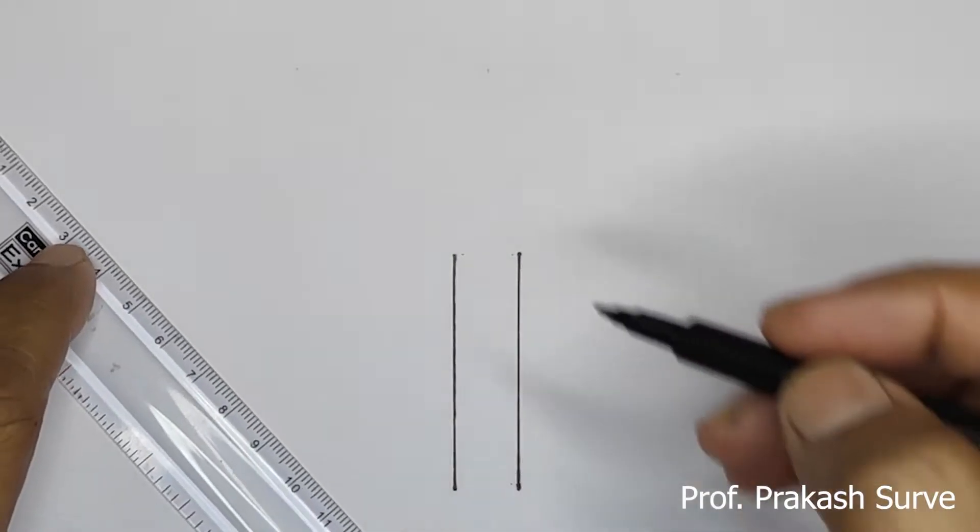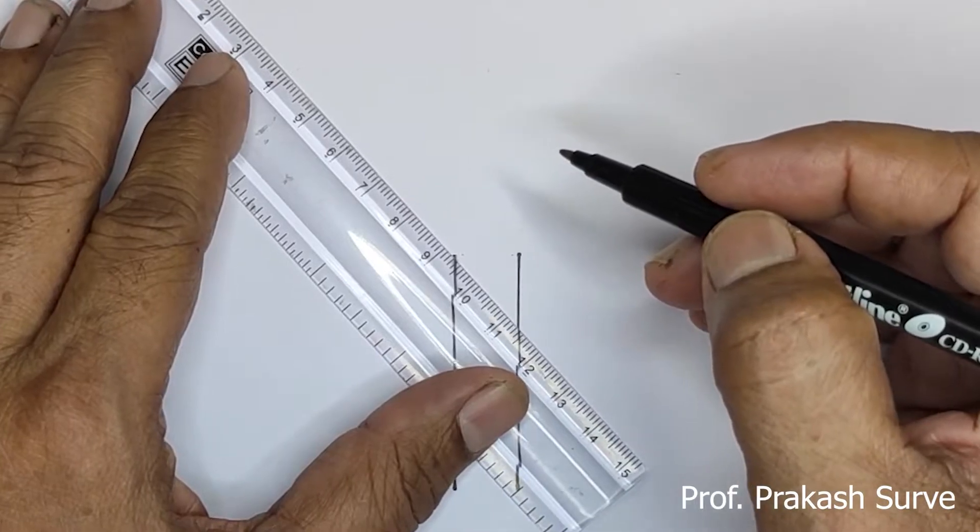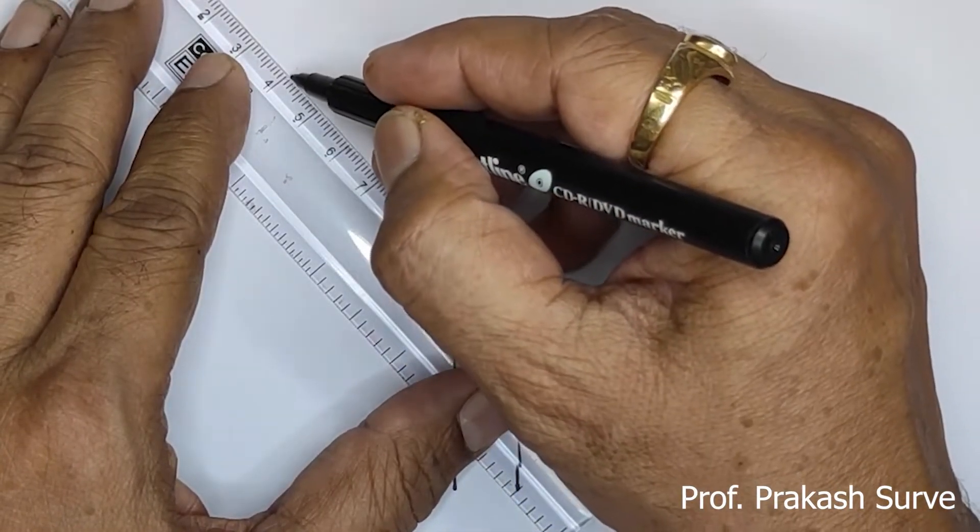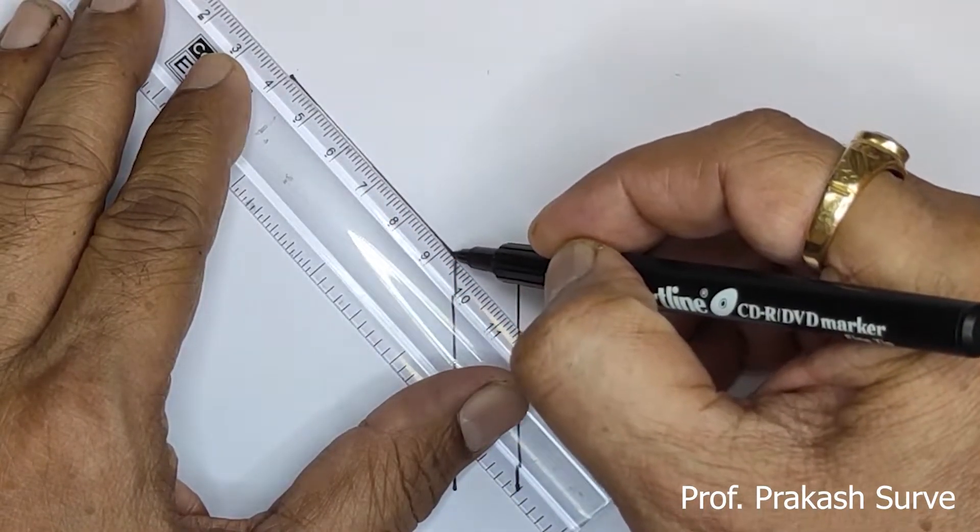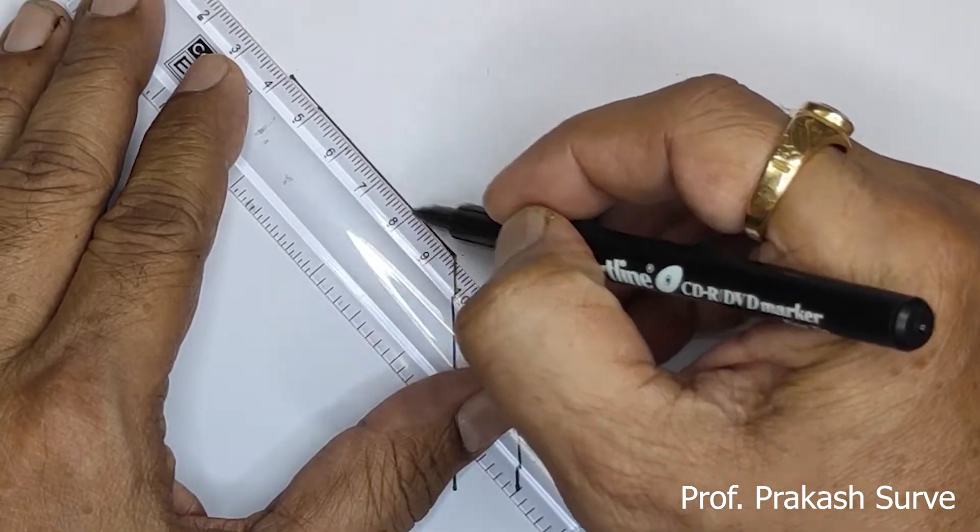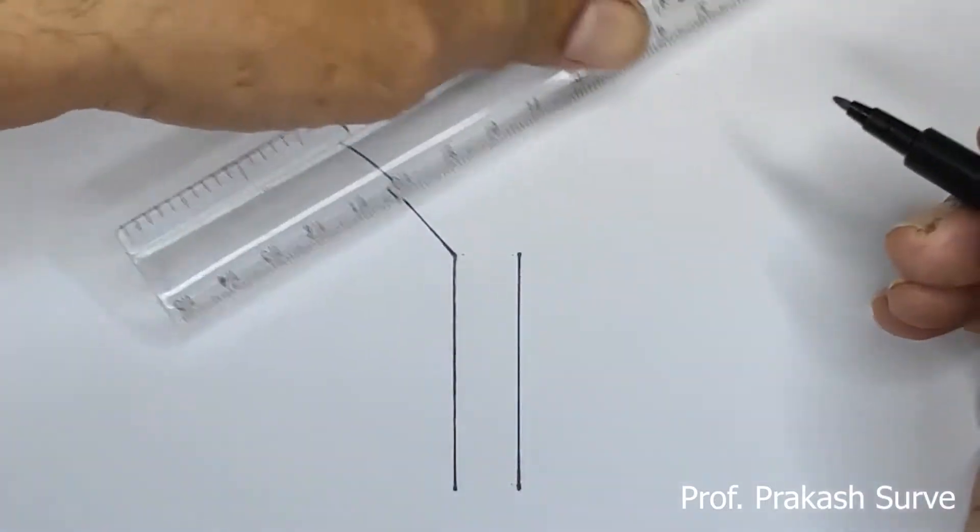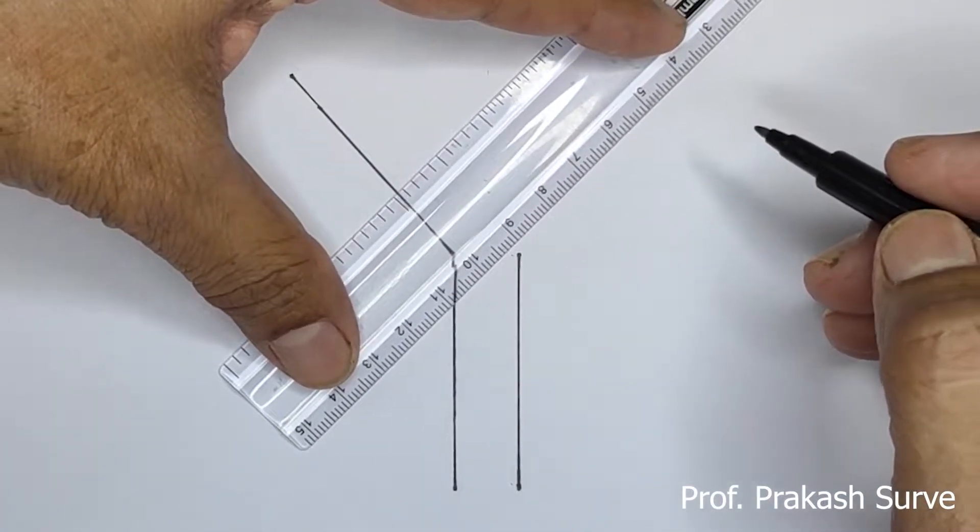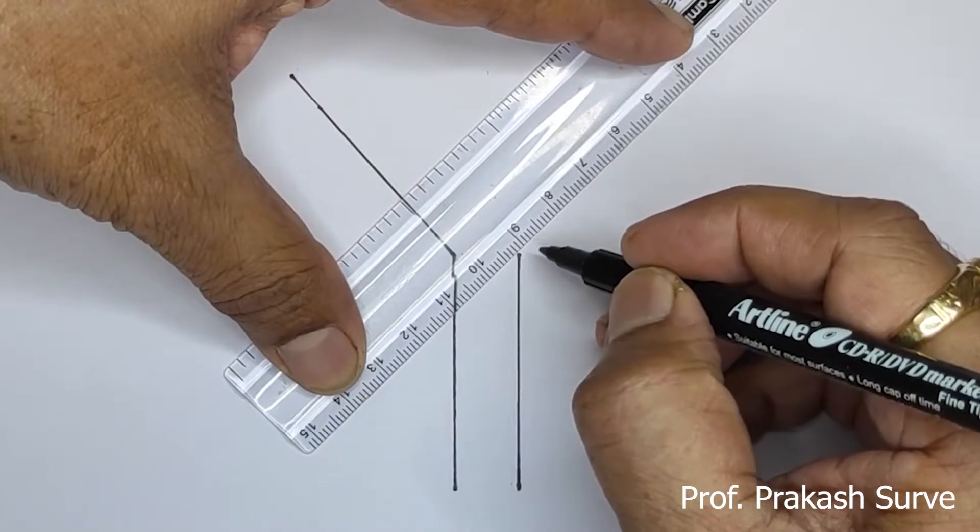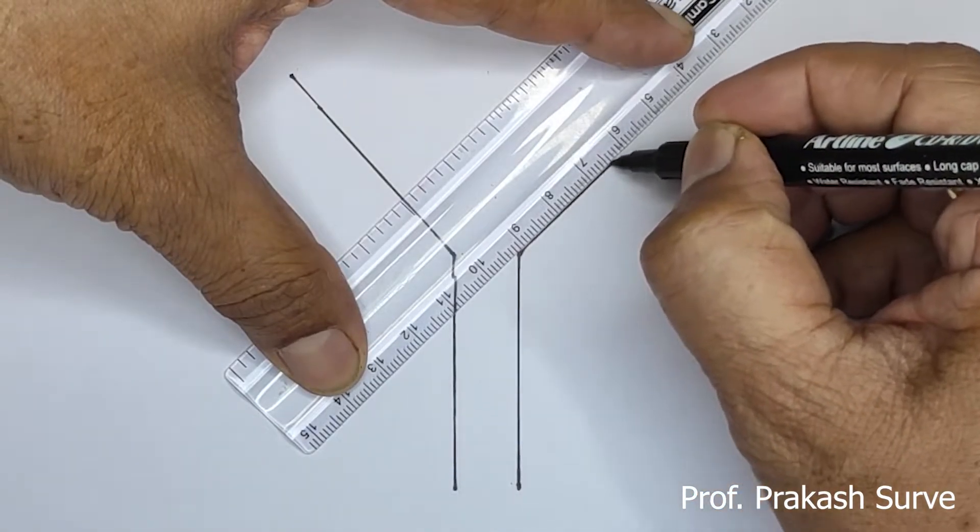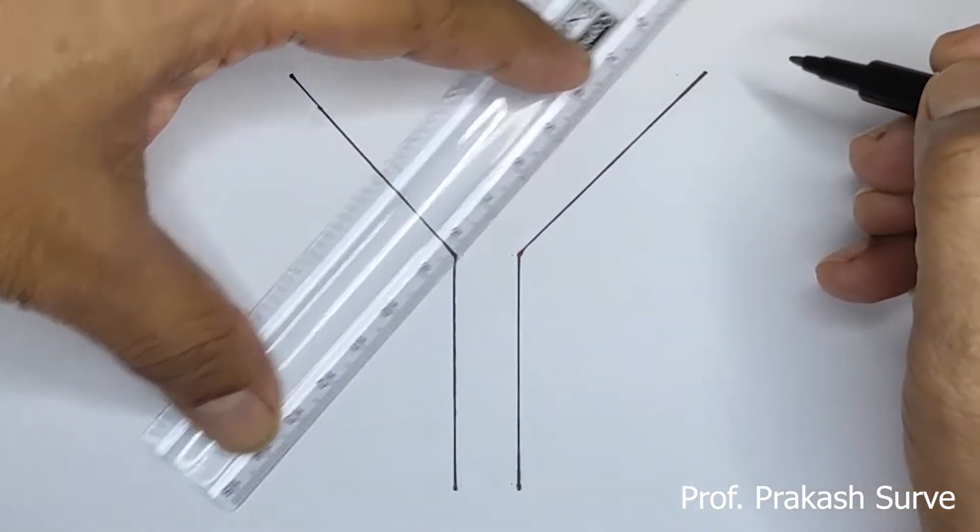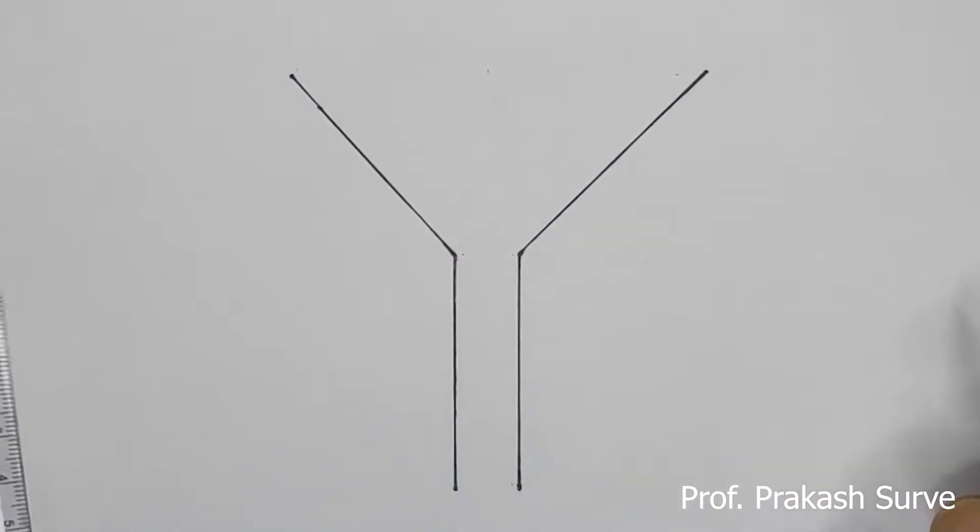Now here we'll make the slanting line like that, here this. So here is a hinge. Same way on this side also we'll make it. So here you got the Y-shaped structure.